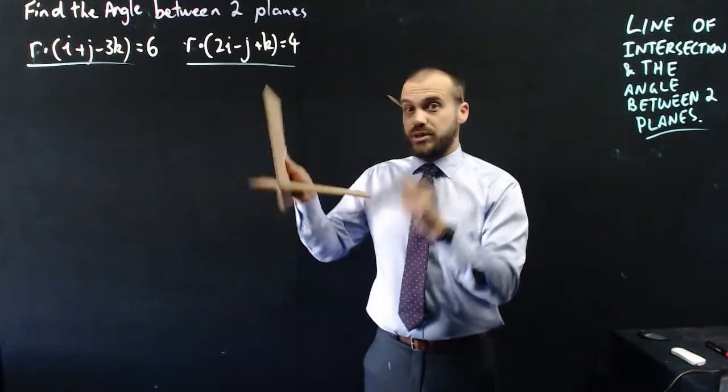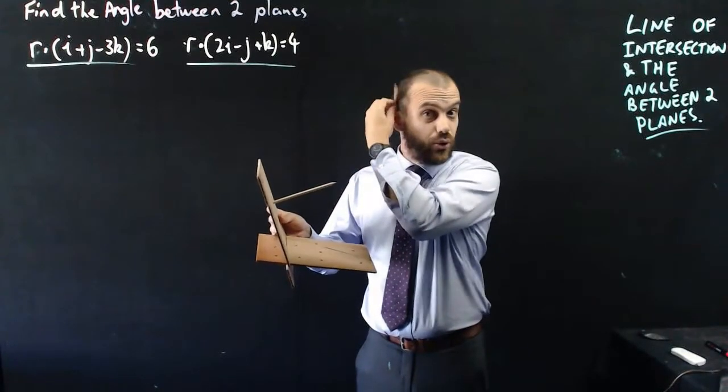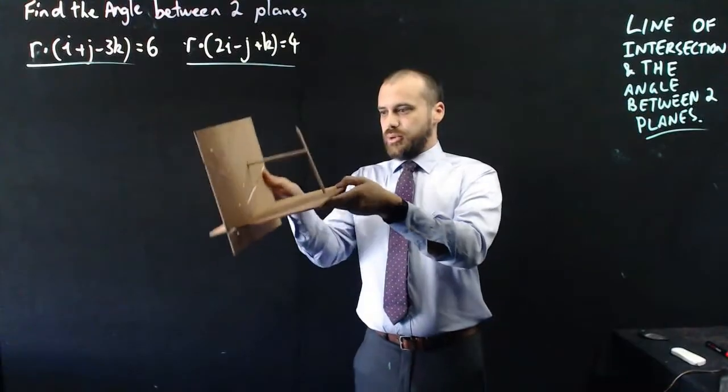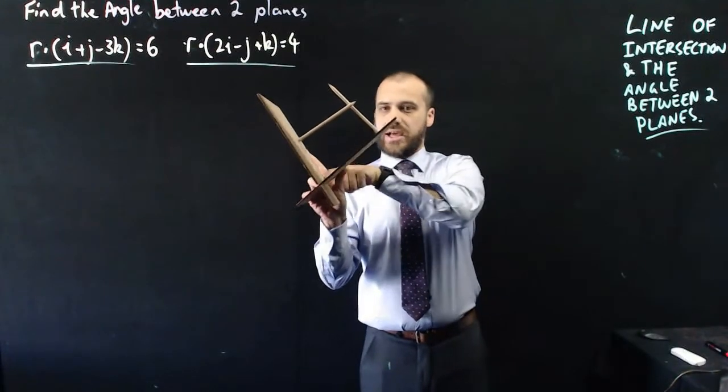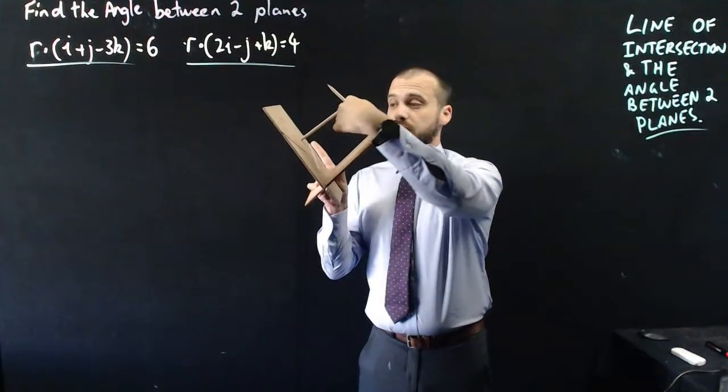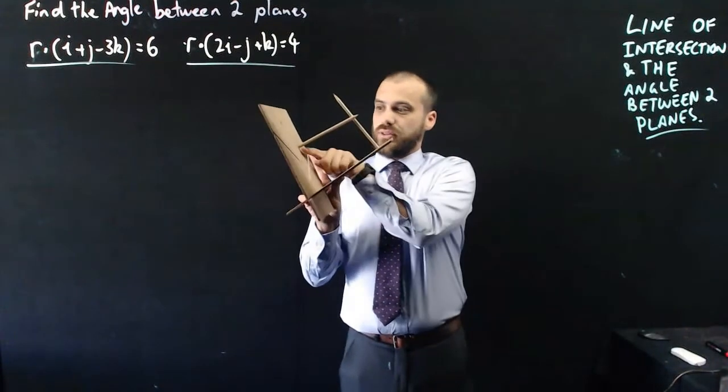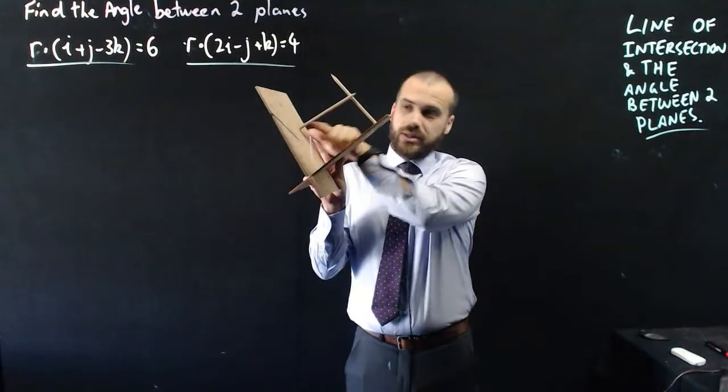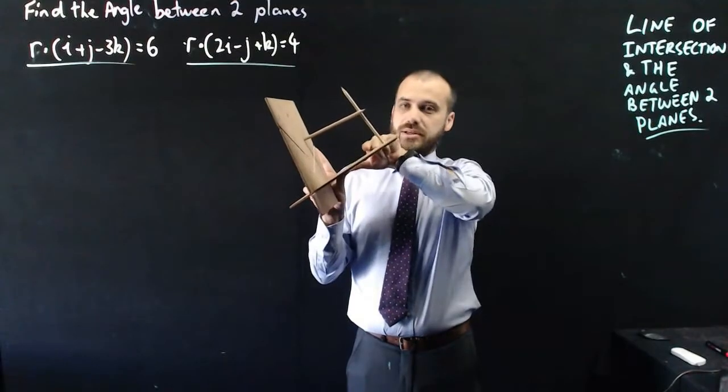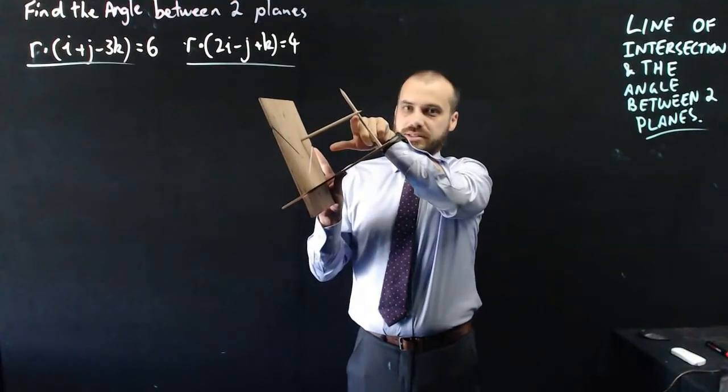Now, why have I got a pen behind each ear? Because finding the angle between two planes is really hard, but finding the angle between two normals is really, really easy. So, there's my planes. That's the angle between them, right there. This is the angle between the two normals, which is really easy to find, because we've got a normal there, we've got a normal there. We know how to find the angle between vectors.